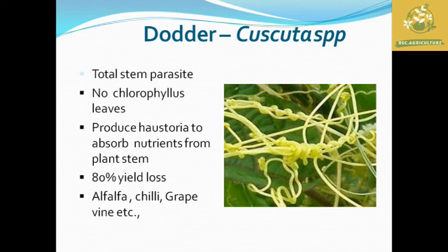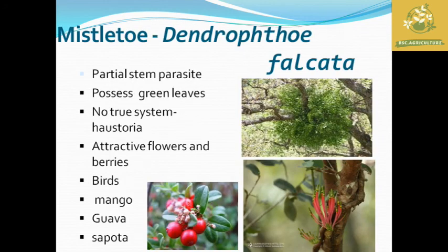After that we are going to see mistletoe, also known as Dendrophthoe falcata. It is known as the partial stem parasite, which possesses green leaves. It does not have a true system of absorption of all nutrient materials from the host.